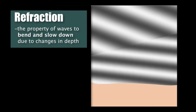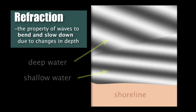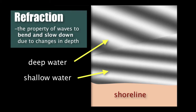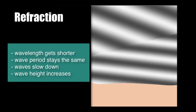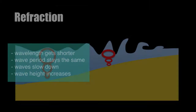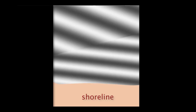Refraction, on the other hand, is the bending and slowing of waves due to changes in water depth. Incoming waves will shorten their wavelength, but since the period remains the same, they have to decrease their speed as the orbitals are feeling the bottom near the shoreline. Waves that approach the coast at an oblique angle will bend until they nearly run parallel with the shoreline.